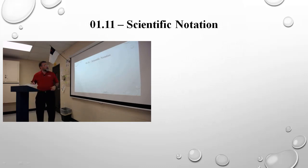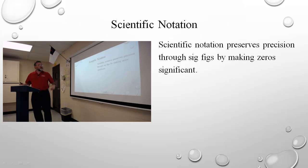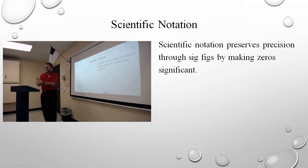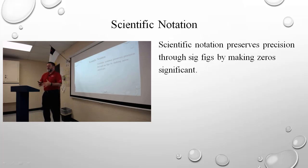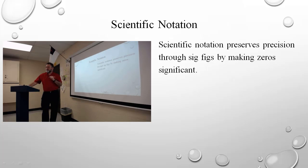Let's move on to the eleventh section of the first module, which is scientific notation — the significance of scientific notation. Up to this point, your familiarity with scientific notation through math is probably so that you can write really big numbers very quickly. That's a very powerful capability. But for us in this class, and for science in general, it also gives us the ability to keep the significance of zeros. Scientific notation preserves the precision of measurements by making zeros significant.